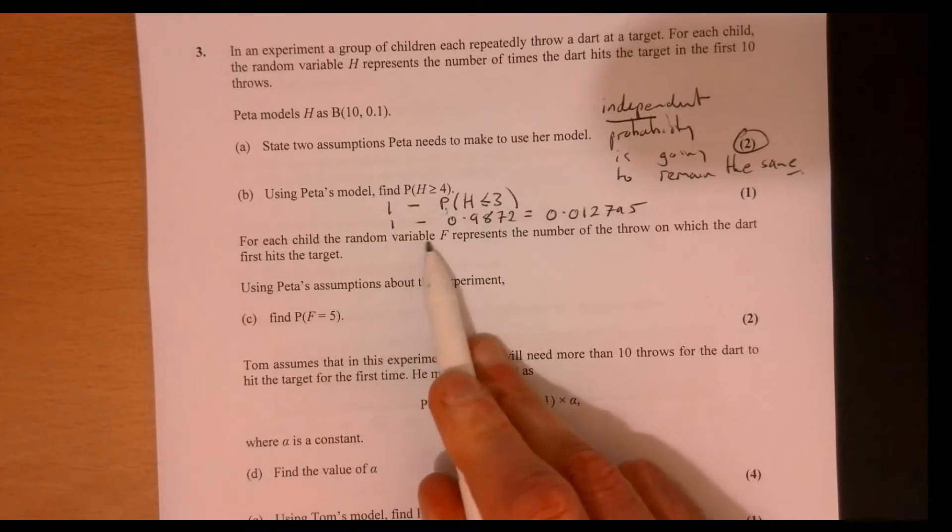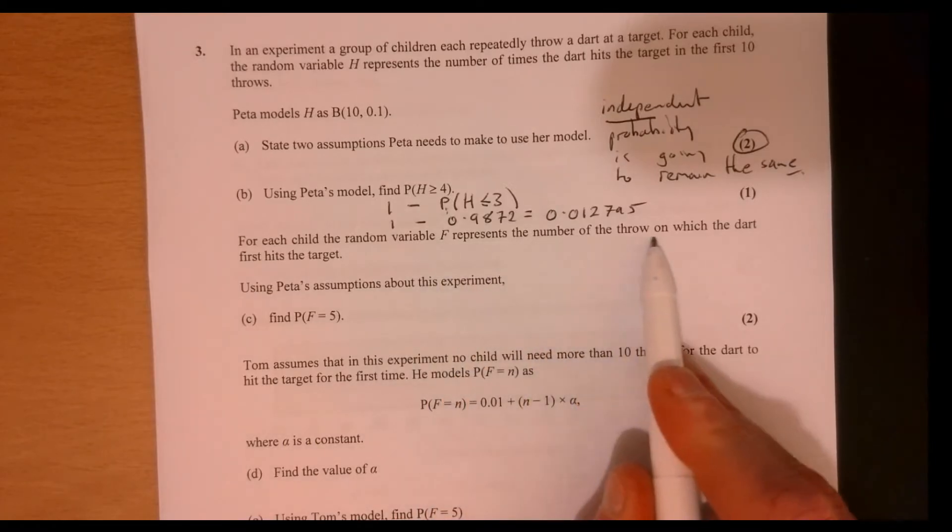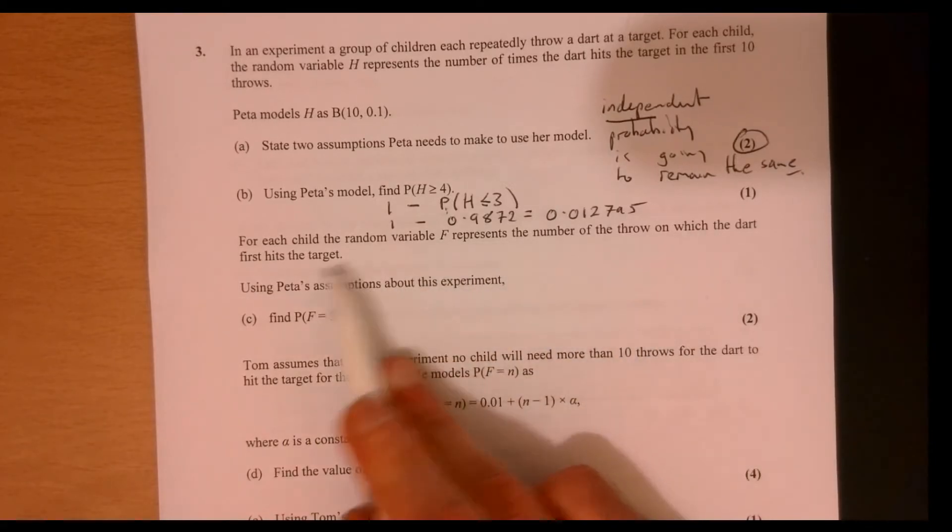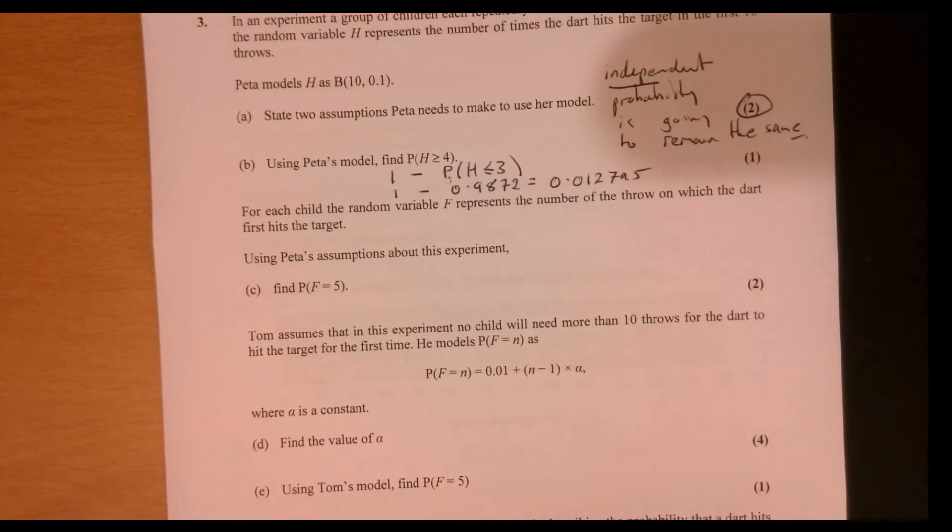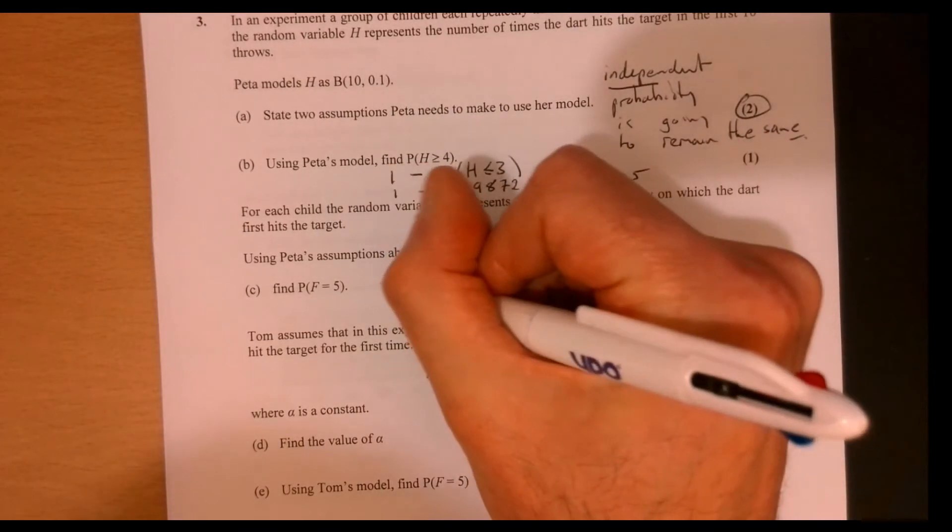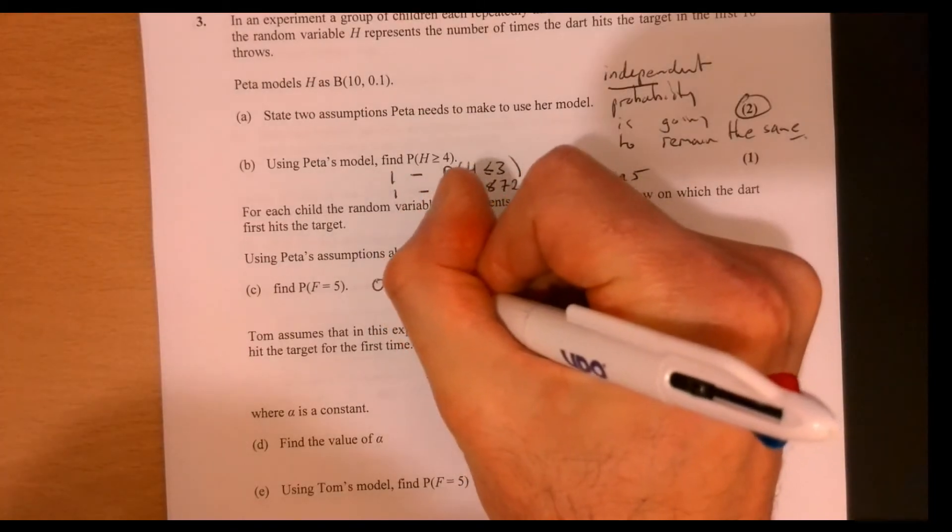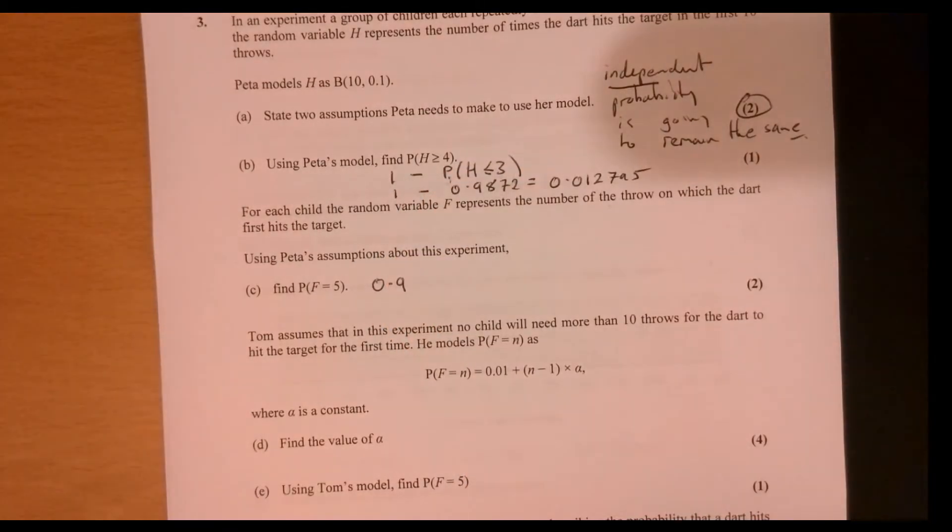Now, for each child, the random variable F represents the number of the throw on which the dart hits the target. Using Petra's assumption about this experiment, find. So in other words, they hit the target. Their first hit is number five. So what has to happen for that to happen? Well, the child's going to miss it four times in a row.